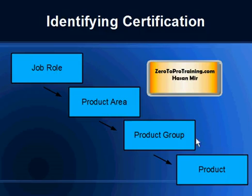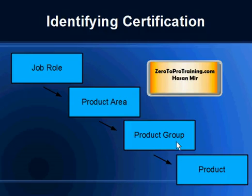Once you select the product group, Oracle will give you all the products in that group. Keep in mind, a job role could span multiple products or multiple product areas as well. You select the job role, then only those product areas are visible where this job role is applicable. Once you select the product area, only those product groups belonging to it are visible. And once you select the product group, only those products belonging to that group are visible.